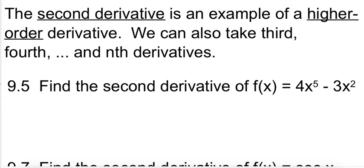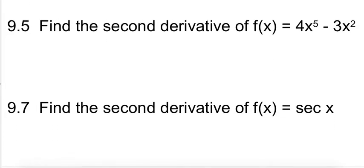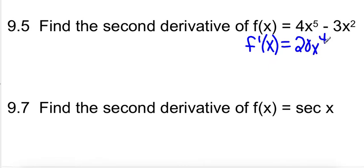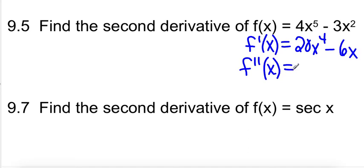We want to find the second derivative of this function. It's a pretty basic function, so first we have to find the first derivative: 4 times 5 gives us 20x to the fourth minus 6x. Then to find the second derivative — we put two little apostrophes — we take the derivative of that, giving us 80x cubed minus 6. And that's the second derivative.